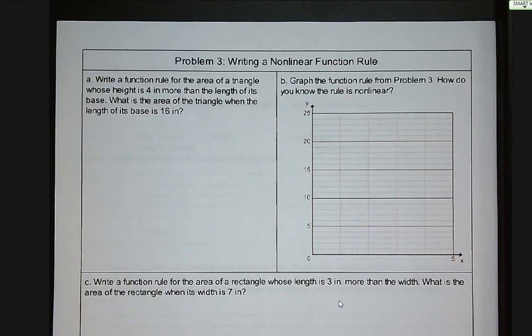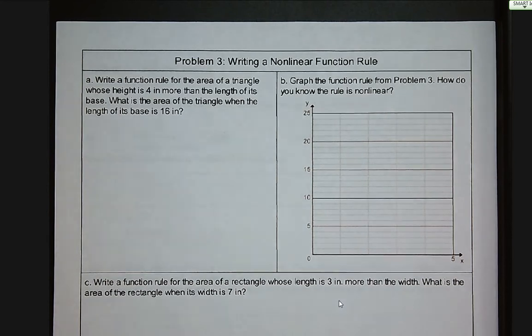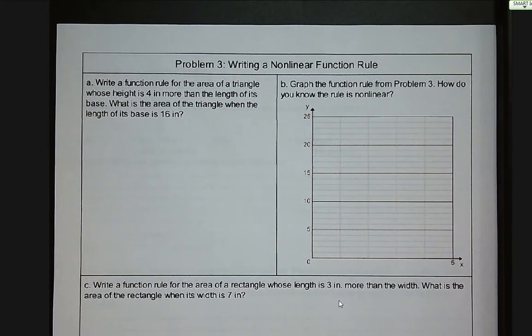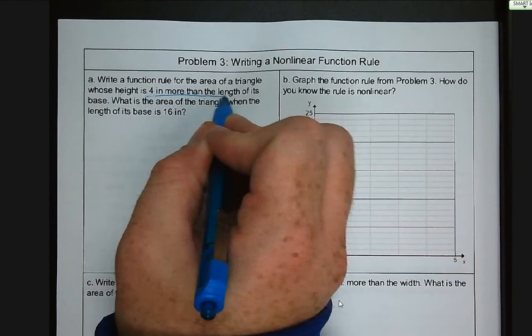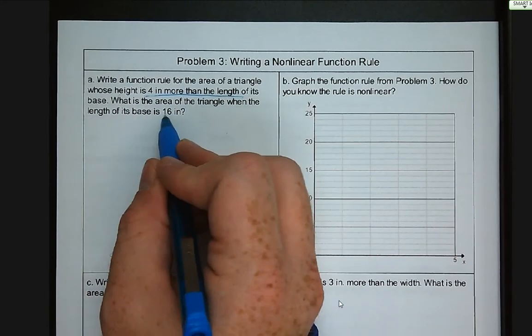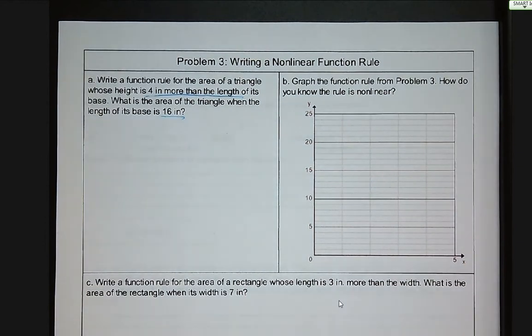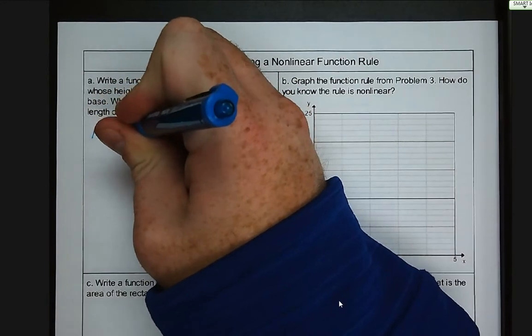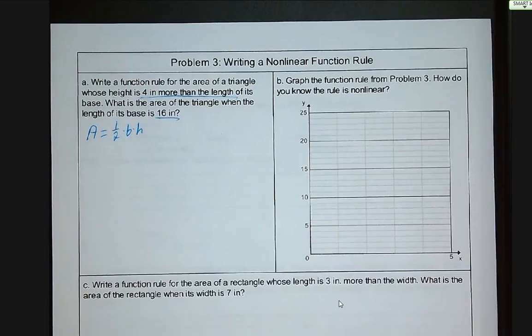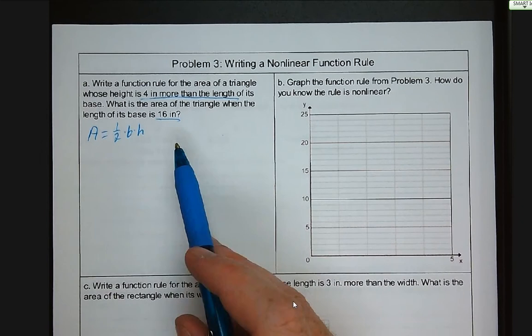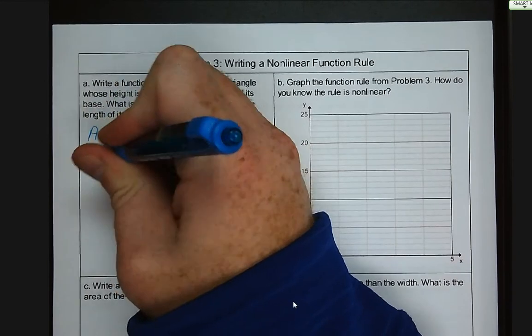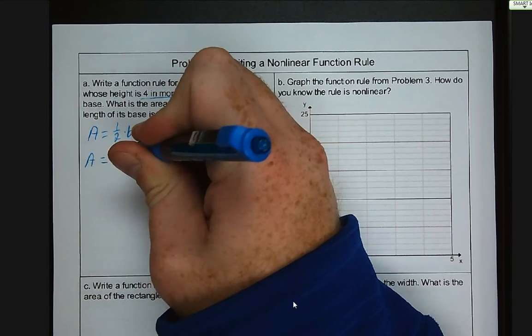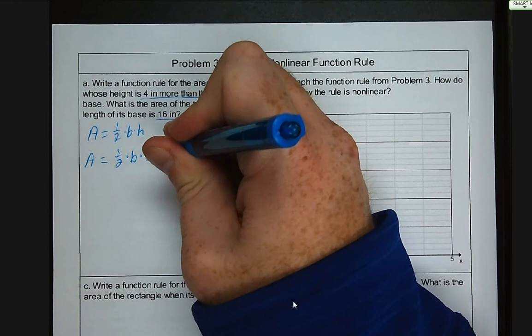Moving on to our second section here. We have writing a nonlinear function rule. So we want to know what is the function rule for the area of a triangle whose height is four inches more than the length of its base. And we want to know when the area of the base is 16 inches. So first let's start with our area equation. Area of a triangle is one half times base times height. And we are told that the height is four inches more than the base. So we can rewrite this as A equals one half times the base times four inches more than the height or the base.